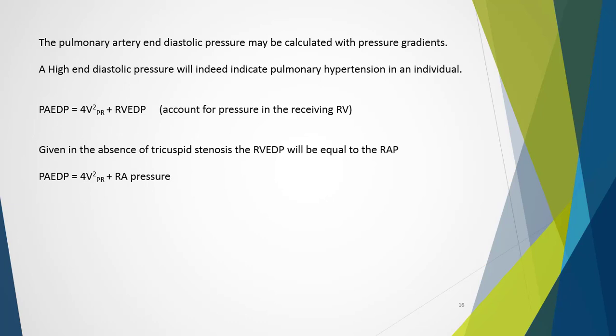Pulmonary artery end-diastolic pressure may be calculated in a similar method. A high end-diastolic pressure indicates pulmonary hypertension. The flow assessed represents the pressure gradient between the pulmonary artery and the right ventricle at end-diastole. Mathematically: PA end-diastolic pressure = 4V²(pulmonary regurgitation velocity) + pulmonary end-diastolic pressure. Given the absence of tricuspid stenosis, RVEDP equals right atrial pressure, so the formula becomes: 4V²(PR velocity) + right atrial pressure.